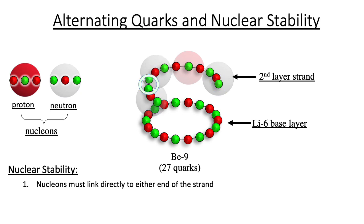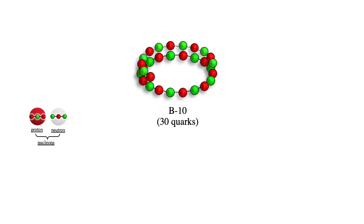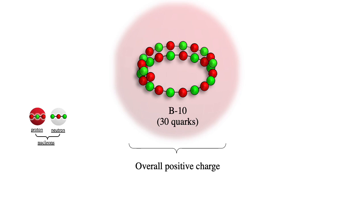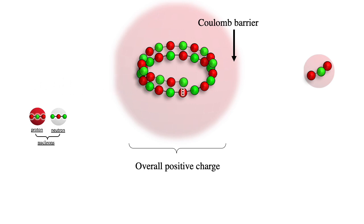The addition of a neutron would produce two adjacent down quarks and would therefore disrupt the alternating sequence — this does not result in a stable nuclide. A proton, however, preserves the alternating quark sequence and creates a correlated pair with a neutron on the lithium-6 base. In turn, the structure of boron-10 predicts the next stable nuclide, boron-11. The second layer of boron-10 has an opening for either a proton or a neutron. However, the atomic nucleus has an overall positive charge, so the proton is effectively screened by the Coulomb barrier. As Chadwick discovered in 1932, the neutron is not impeded by the Coulomb barrier, and thus boron-10 becomes boron-11.